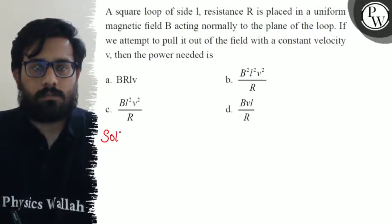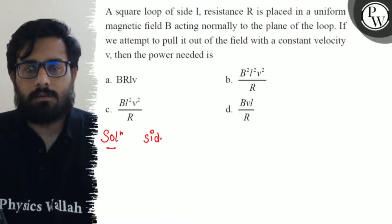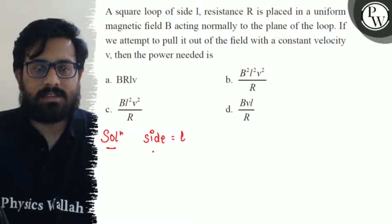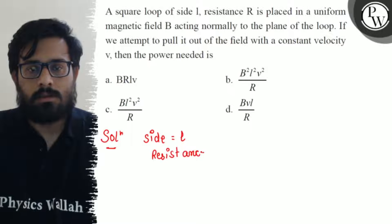So in this question, we have a square loop having a side of L, having a resistance of R.